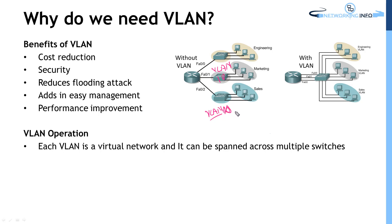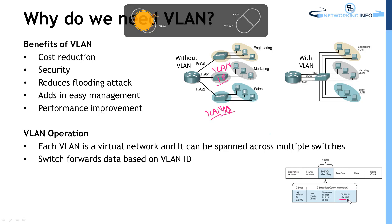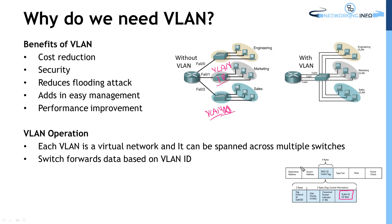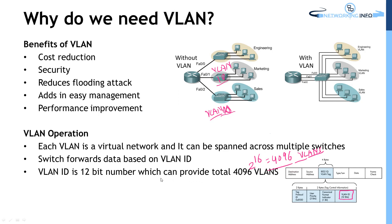Switches understand the VLAN ID number, and we can understand the name, so you can assign both an ID and a name. The VLAN ID is a 12-bit number embedded in the frame. With 12 bits, 2 to the power of 12 gives a total of 4096 VLANs. So you can create a total of 4096 VLANs.